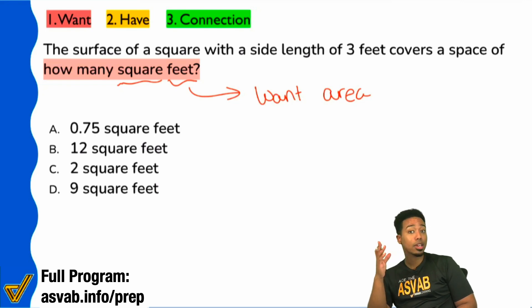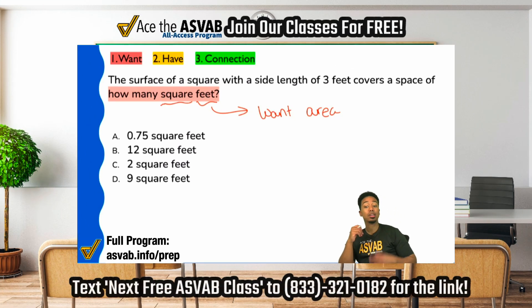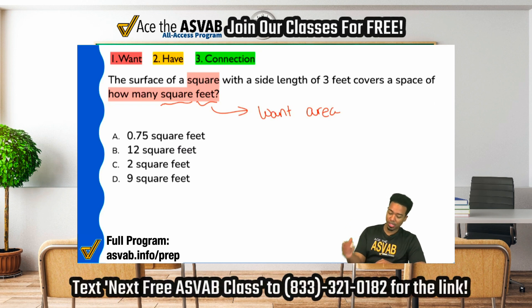Is it a rectangle, parallelogram, triangle? What is this? It's a square. Yes. Notice that it says right here, square. So the surface of a square with this side length is how many square feet? What's the area?